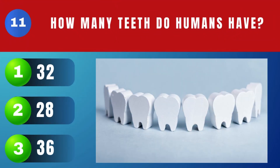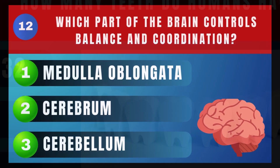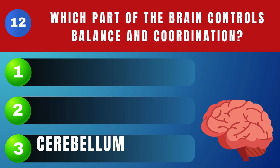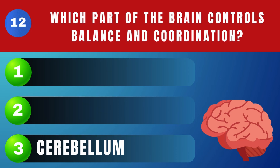How many teeth do humans have? Thirty-two. Which part of the brain controls balance and coordination? Cerebellum.